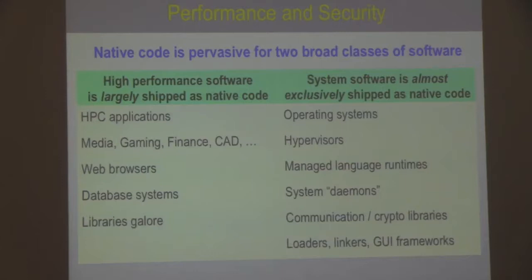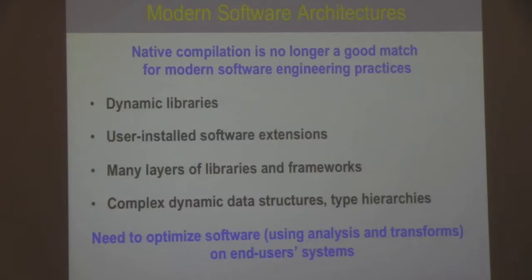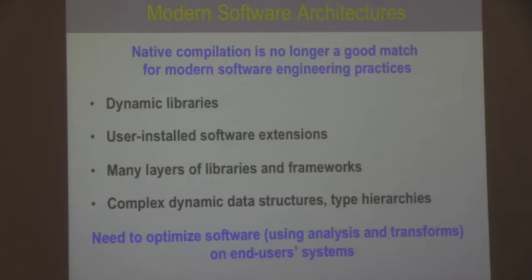These two classes of software get no benefits from the ability to delay compilation to a later stage. The native model of compilation is in some sense an anachronism: both software and hardware have moved to a point where native compilation is not a good model. Modern software architectures use dynamic libraries extensively, user-installed software extensions are becoming more common, and there are many layers of libraries and frameworks with complex data structures whose information is really only available at runtime.